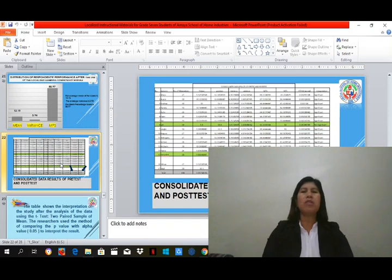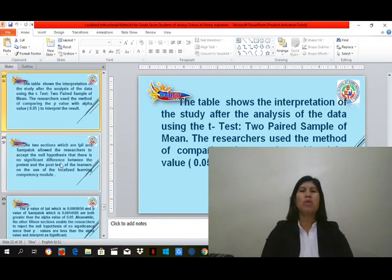This is the consolidated data results of pre-test and post-test. The table shows the interpretation of the study after the analysis of the data using the t-test, two paired sample of means. The researchers used the method of comparing the p-value with alpha value, which is 0.05, to interpret the result.